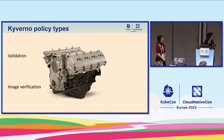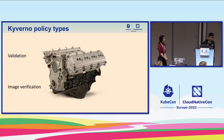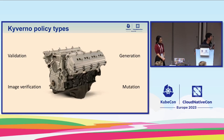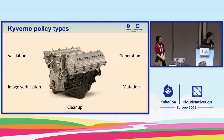Kyverno currently supports five types of policies. There are validation and image verification policies, used to validate and verify resource content. There are generate policies, used to automatically create additional resources in the cluster when something happens. There are mutation policies, which can modify resources on the fly while being admitted by the API server. And since Kyverno 1.9, there is a new cleanup policy type that can periodically delete resources in the cluster based on certain conditions.